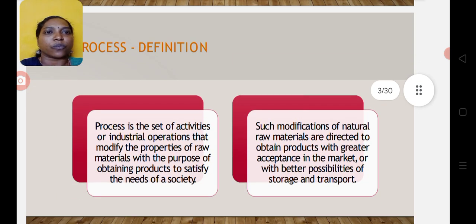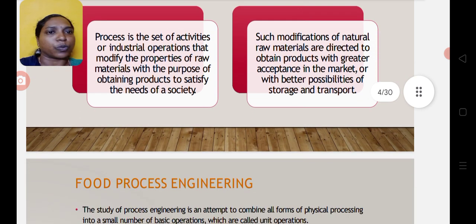The definition of this process is a set of activities or industrial operations that modify the properties of raw materials with the purpose of obtaining products to satisfy the needs of society. The final product from the food industry should be well accepted in the market and should be in a condition suitable for storage and transport.